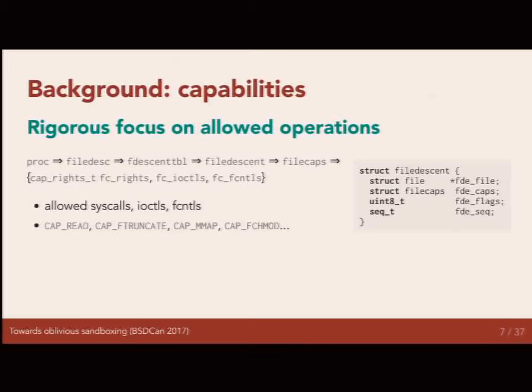At first we had 50-something of these rights and they fit in a 64-bit bitmask. Now there are more than 64 of them, so there's a slightly more complicated data structure — Pavel had a clever solution for that. Those are the two main aspects of Capsicum: capability mode, which cuts off access to global namespaces, and capabilities, which allow access to file-based resources in a very fine-grained way.